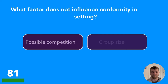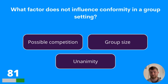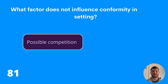Question eighty-one: what factor does not influence conformity in a group setting? Possible competition, group size, or unanimity? The answer is possible competition.